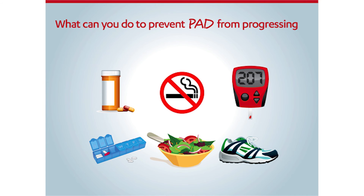You can prevent PAD from progressing by making sure you take your medications as prescribed. Having a routine, like a pillbox, can help make it easier to remember to take all of your medications. Smoking is a big risk factor for PAD. If you smoke, stopping now is the best thing you can do for your health, now and in the future.